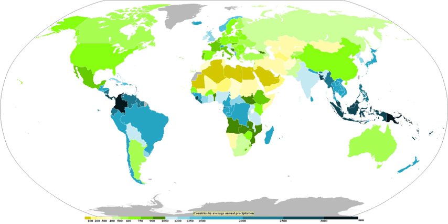Precipitation is a major component of the water cycle, and is responsible for depositing the fresh water on the planet. Approximately 505,000 km³ of water falls as precipitation each year: 398,000 km³ over the oceans and 107,000 km³ over land. The globally averaged annual precipitation is 990 mm, but over land it is only 715 mm. Climate classification systems such as the Köppen climate classification use average annual rainfall to differentiate between differing climate regimes. Precipitation may also occur on other celestial bodies; Mars has precipitation which most likely takes the form of frost, rather than rain or snow.